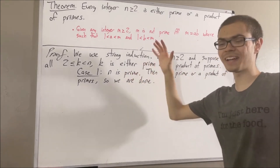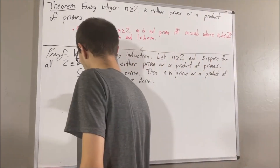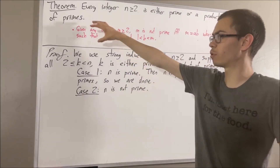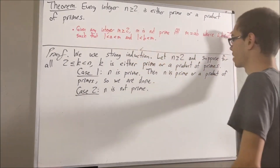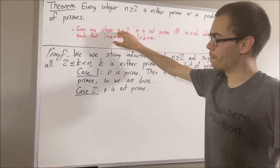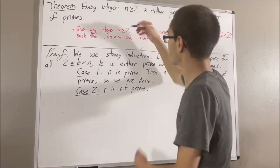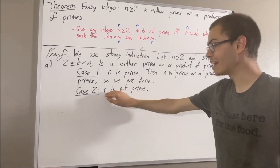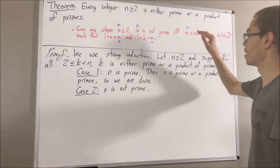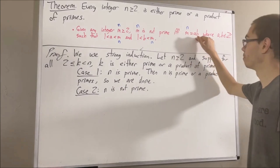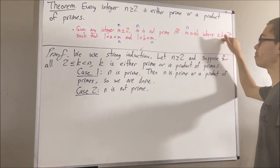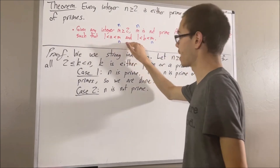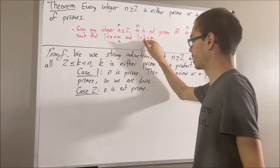Now let's consider the case where n is not prime. Since n is not prime, we can apply this fact. We have that n is equal to a times b, where a and b are integers such that 1 < a < n and 1 < b < n.